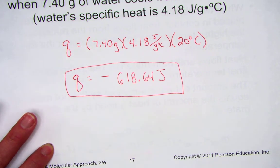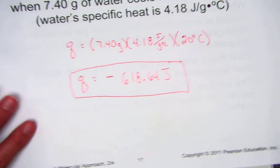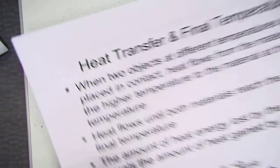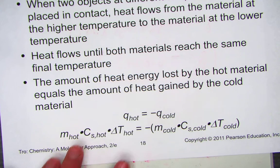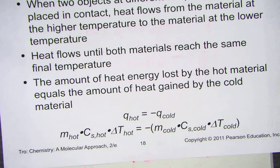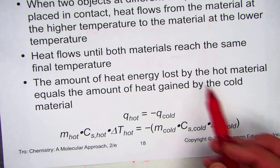M times C times delta T. The next topic is heat transfer and final temperature. When two objects at different temperatures are placed into contact, since heat is an energy, it flows from the material that's hot to the material that's cold, until they've reached the same final temperature.